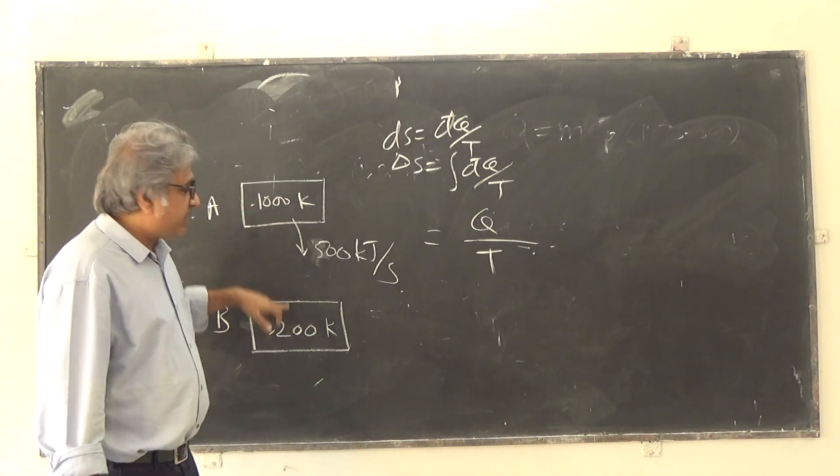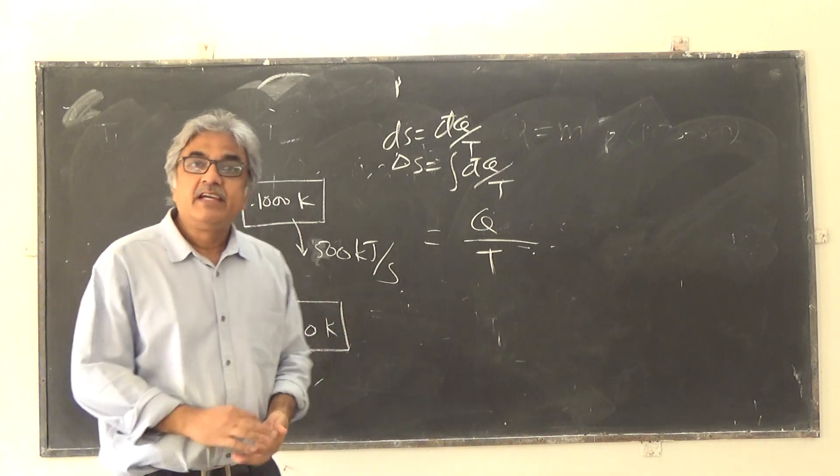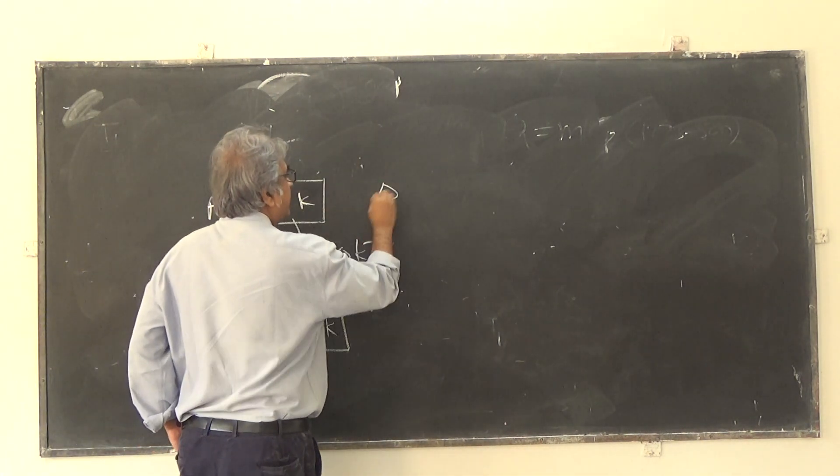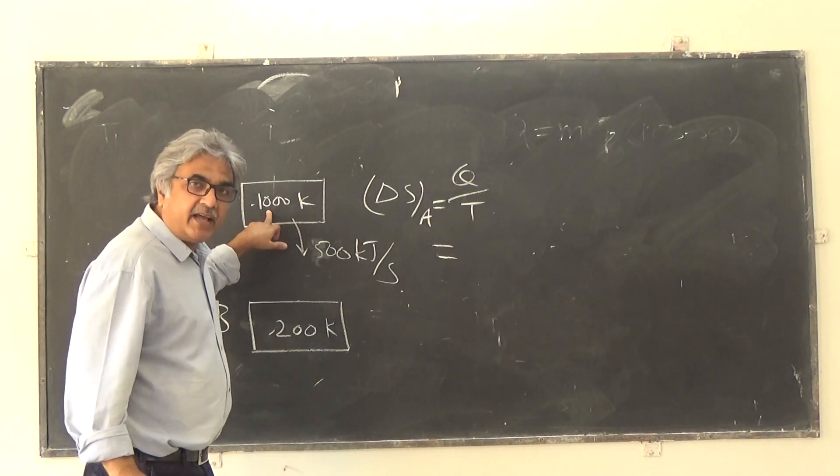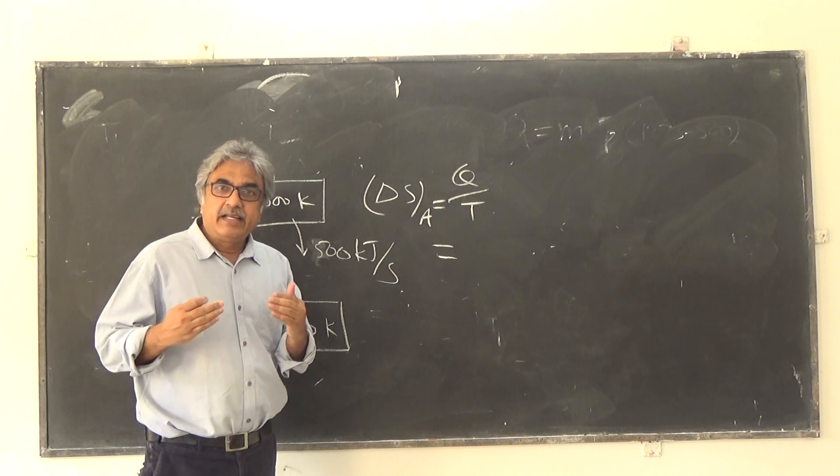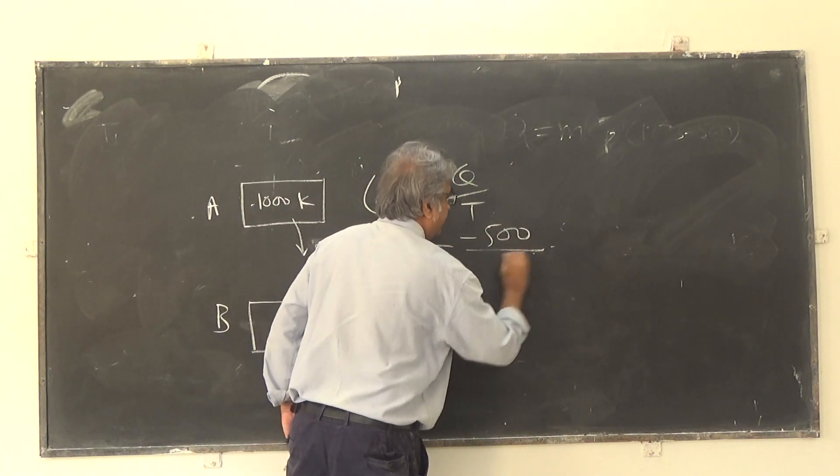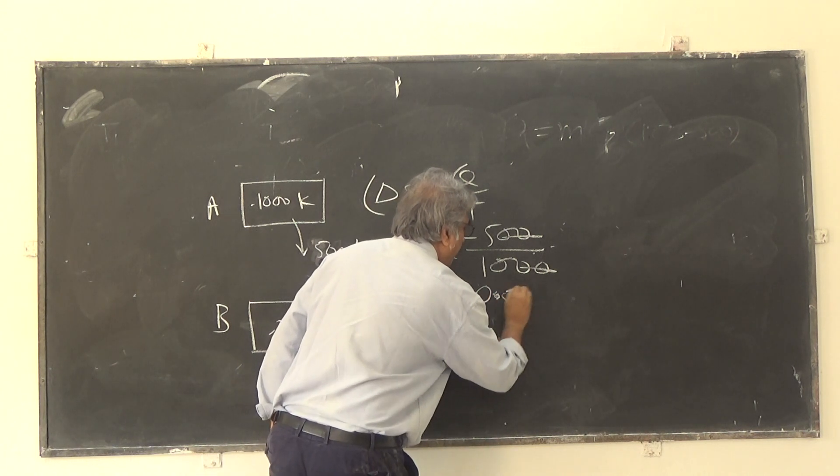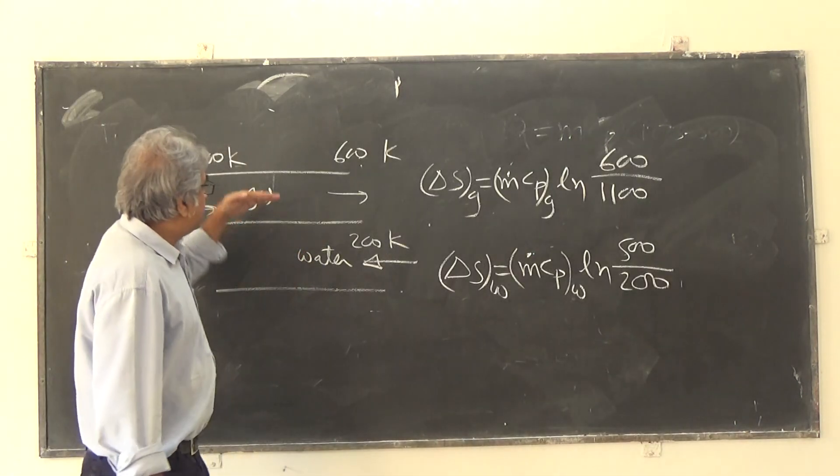And you can see Q is flowing out, so you can give negative sign to it. So if this is clear, then we have all the data. So delta S_A is Q by T, and this is 500 by 1000. Now see, here, since 500 kJ per hour is the heat that is leaving this body A, we can consider it with negative sign. So this is essentially -0.5 kJ per Kelvin hour.